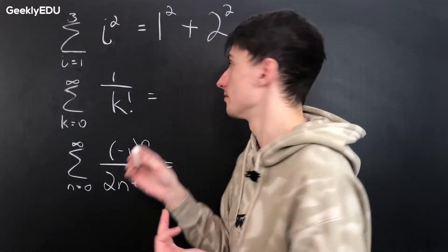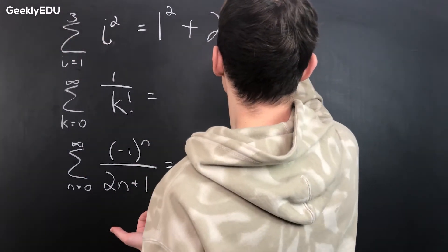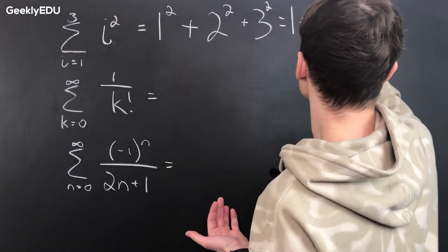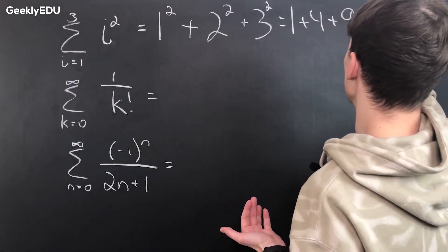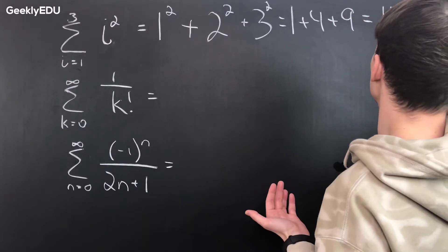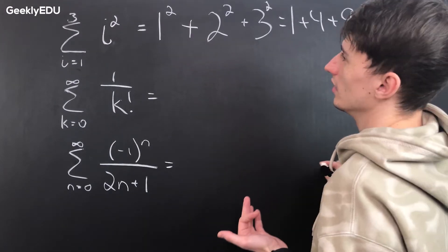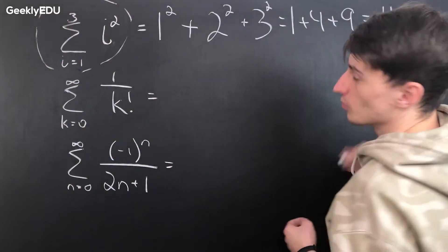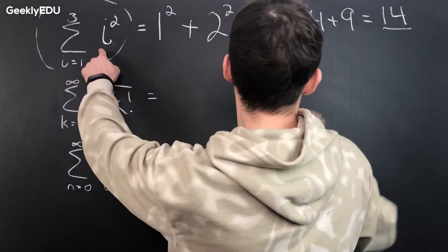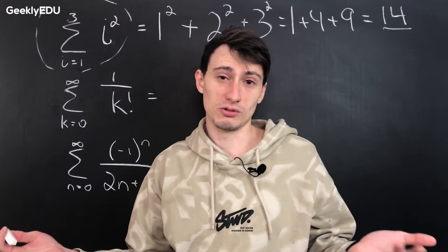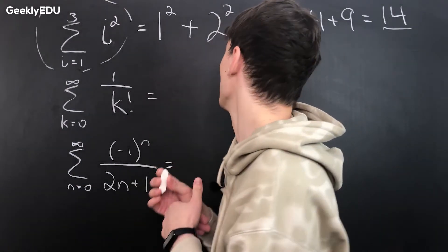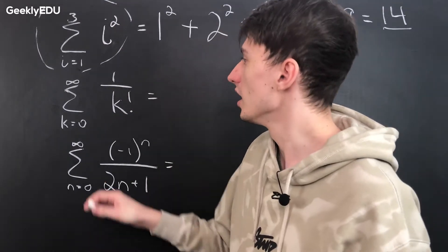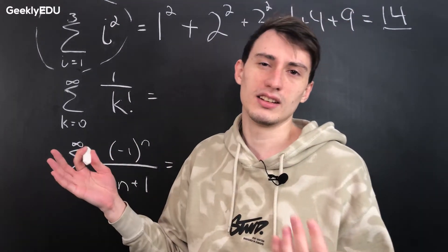The last number is 3, so it's plus 3 squared. That equals 1 plus 4 plus 9, or in other words 14. So if you were to write either the sigma notation or 14 on a math test you would be right — your teacher would not take any points off. Now let's take a look at the next example. Here we can use the letter k — it can be any letter.